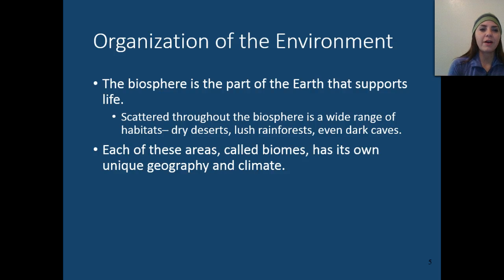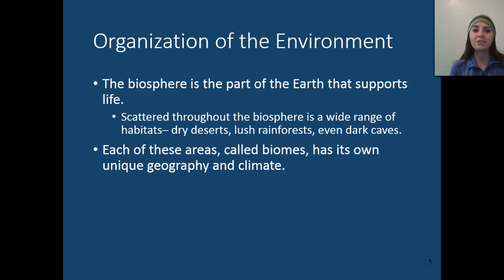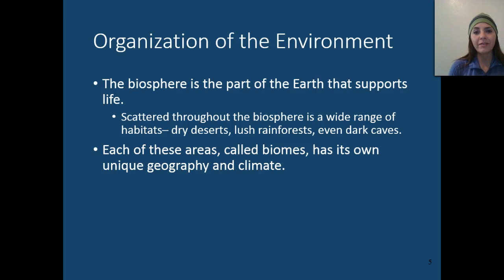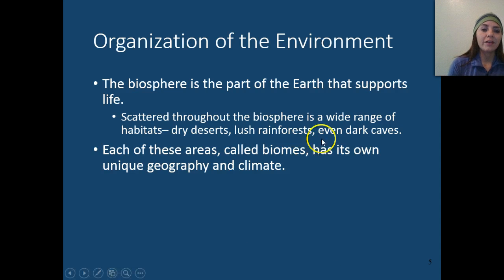Regarding the organization of the environment: the biosphere is the part of Earth that supports all of life, and scattered throughout the biosphere is a very wide range of habitats — deserts, oceans, rainforests, deciduous and coniferous forests, taigas, and even super dark caves where animals have adapted to live blind. Each of these areas is called a biome, and it has its own unique geography as well as its own unique climate.